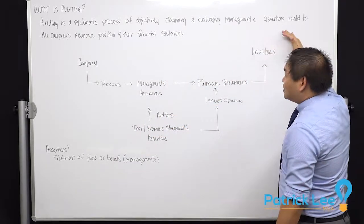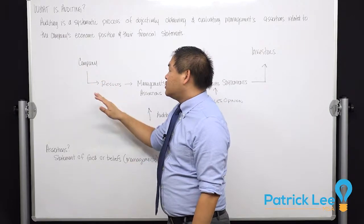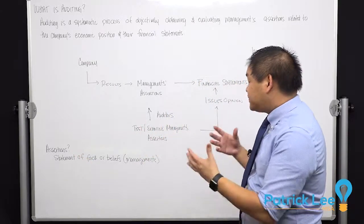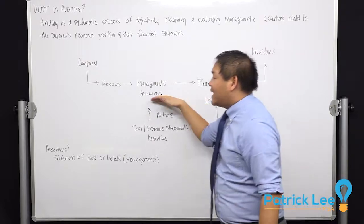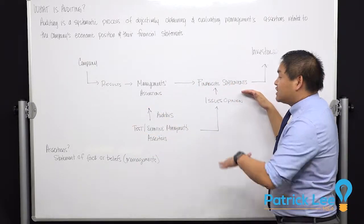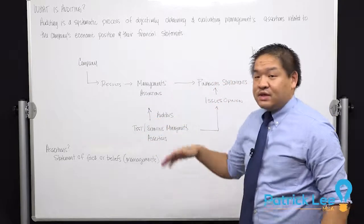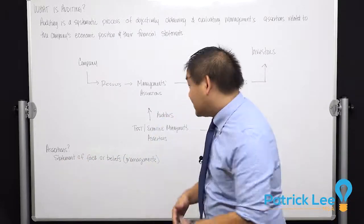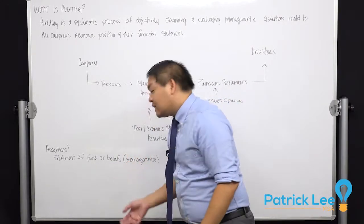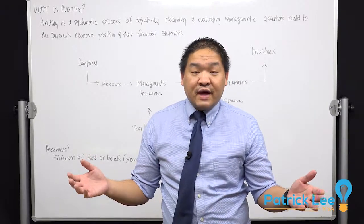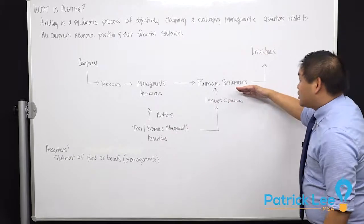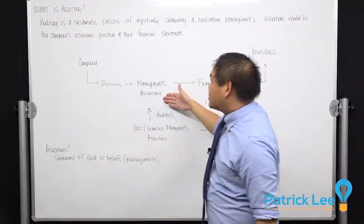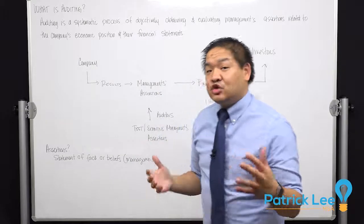At the end of the day, what does the company do? The company produces results by running the business. Those results typically are in the form of financial statements. They're going to make assertions based on their financial position and put together their financial statements — which are really just a whole bunch of assertions, things they're telling you are true, things they're telling you are facts. Those financial statements are prepared and given to investors, and the question is how can investors trust these management assertions given by the company?